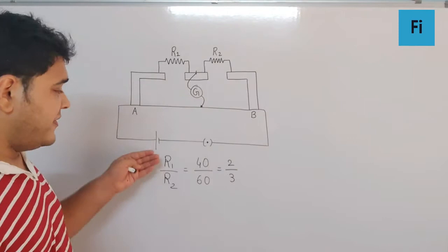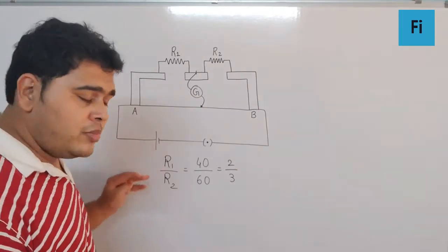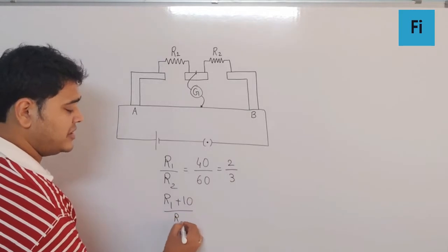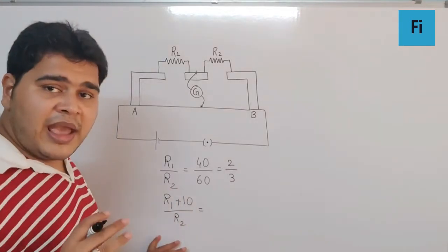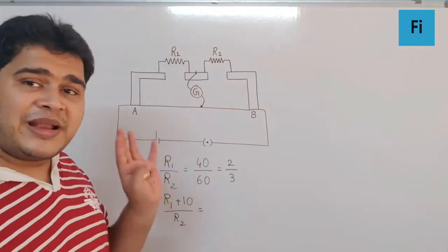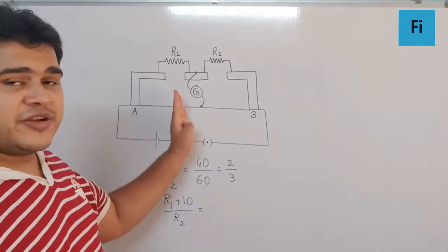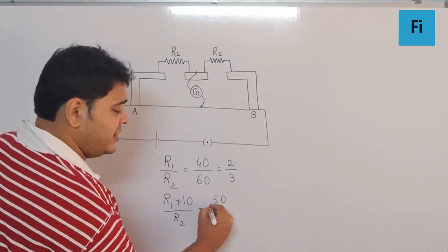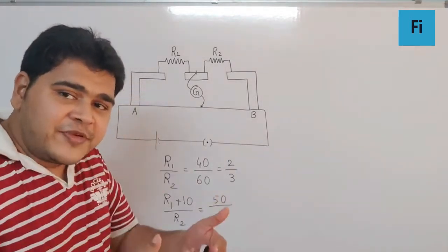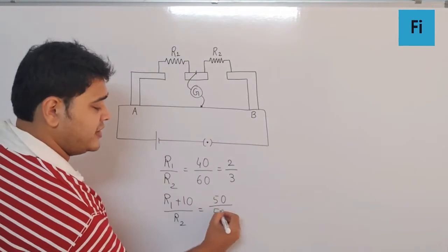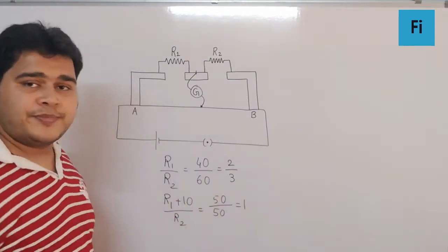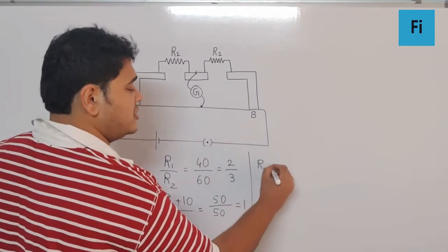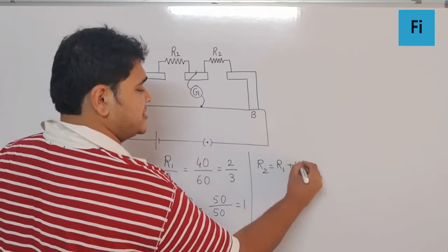Now if I add R1 with 10 ohm, we get R1 plus 10. R2 remains as it is, and the null point shifts by 10 towards B, which means 40 increases by 10 to become 50, and upon 100 minus 50, which is also 50, so this ratio is 1. So we can say R2 is actually equal to R1 plus 10.